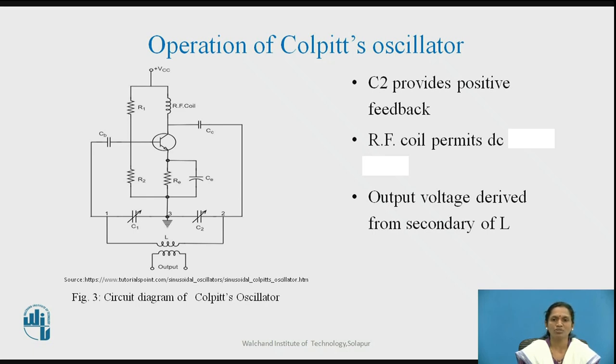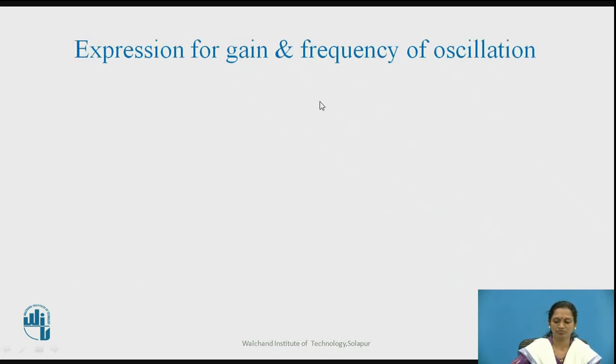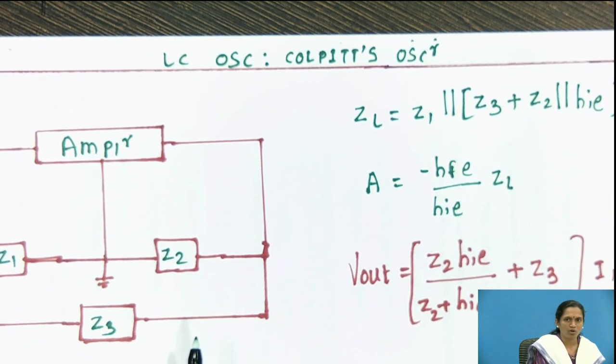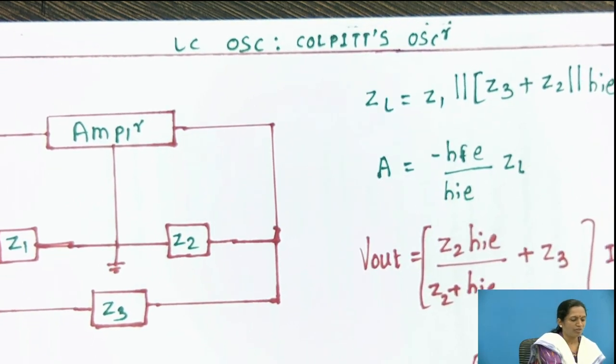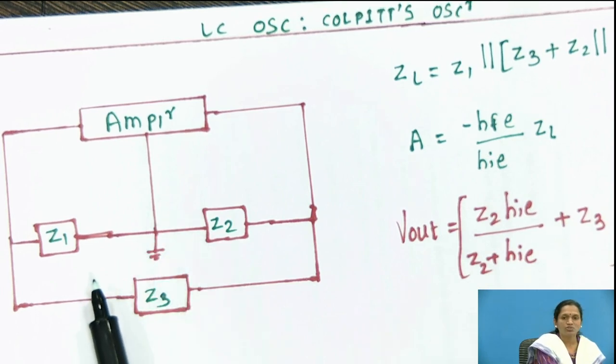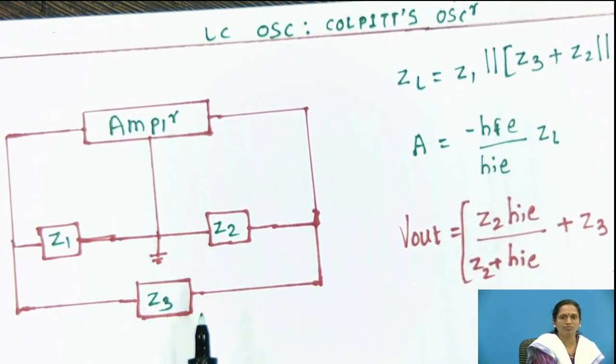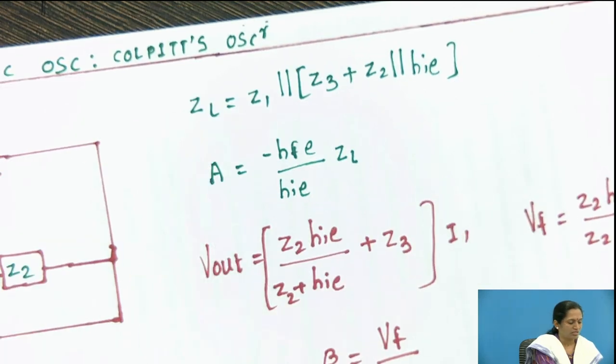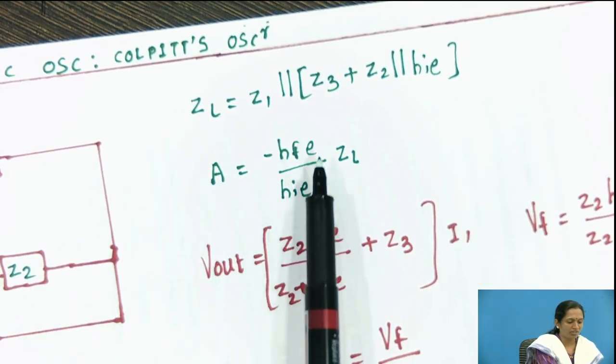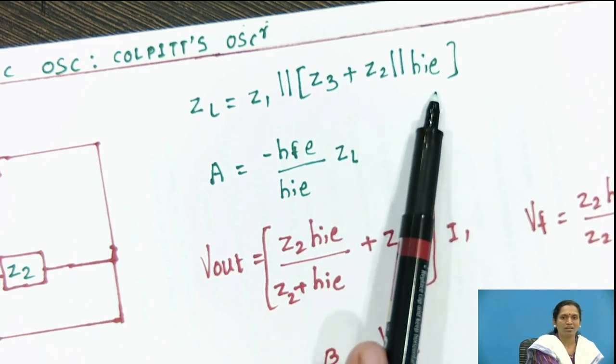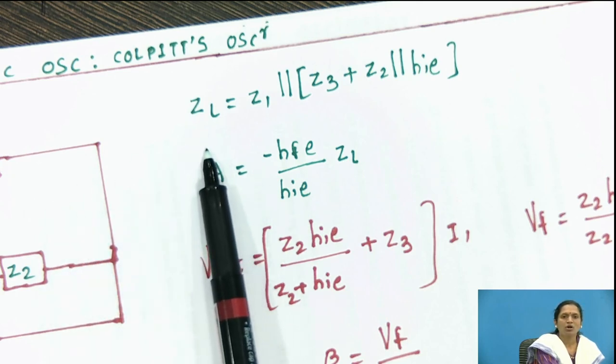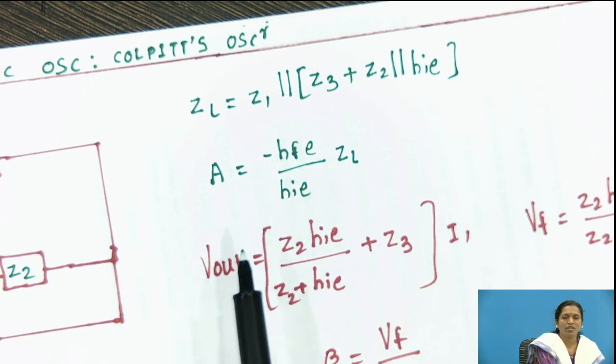Output voltage is derived from the secondary of inductor expression of the Colpitt's oscillator. So, you can see here, this is the basic circuit diagram or block diagram of Colpitt's oscillator, where amplifier is wired through this tank circuit Z1, Z2 and Z3. So, equivalent resistance or output impedance is nothing but Z1 parallel with Z3 plus Z2 parallel HI.